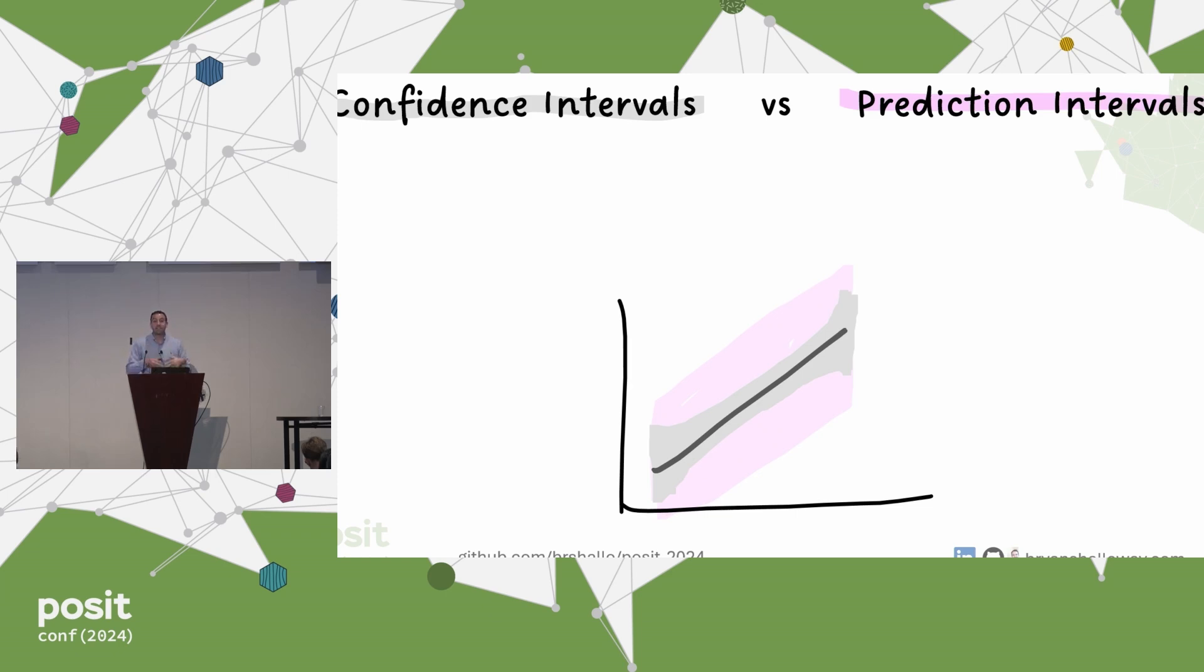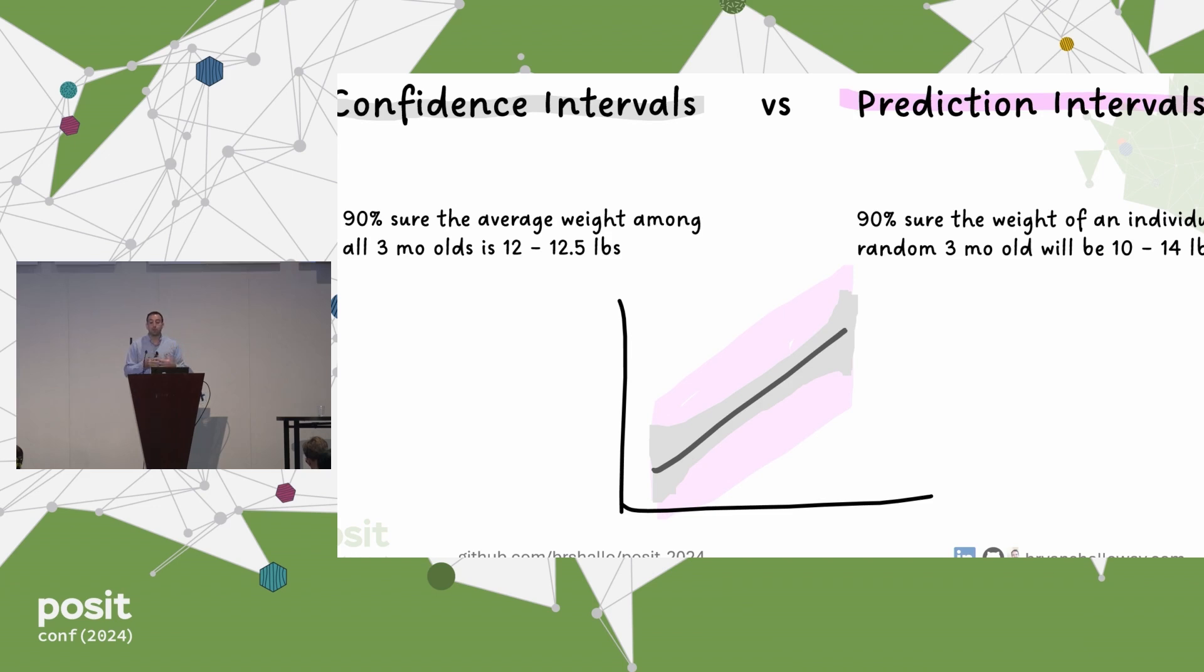To knock this message home about the types of phrasing that is commonly used between these two types of intervals, if we think of this as a model of baby weight by age, and we want to describe confidence intervals, you might have a statement like: we're 90% sure that the average weight among all three-month-olds is between 12 and 12 and a half pounds. This is a confidence interval-like statement. Whereas for prediction intervals, you'd say something like: we're 90% sure that the weight of an individual three-month-old will be between 10 and 14 pounds. This first statement is about making global claims about the world. The latter represents a measure of uncertainty on an individual observation. And when we're outputting predictions, we generally care about these latter types of statements.